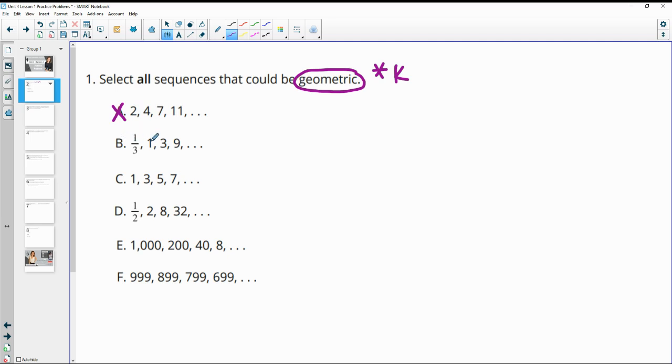Part B: one third to one, one to three, three to nine. This is actually multiplying by three each time. So this one is geometric with that common factor of three.